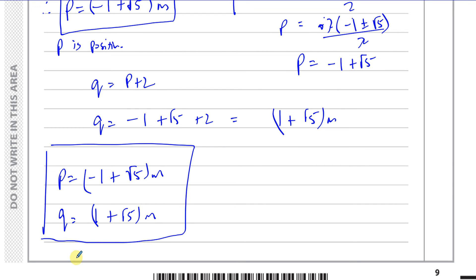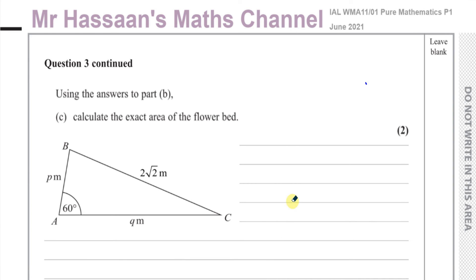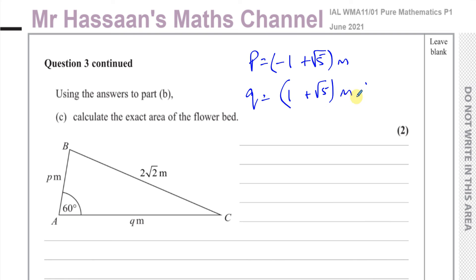So the solutions are P equals minus 1 plus root 5 meters, and Q equals 1 plus root 5 meters. Those are the answers to part B. Now for part C, we have to calculate the exact area of the flower bed. We'll use the formula: area equals a half times A times B times sine C — the formula used when we don't have a right-angle triangle — where A and B are the two sides and C is the angle between them.